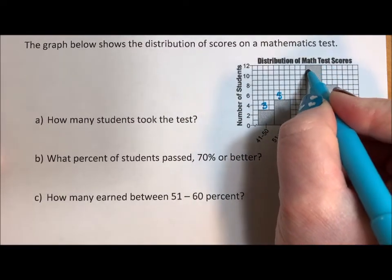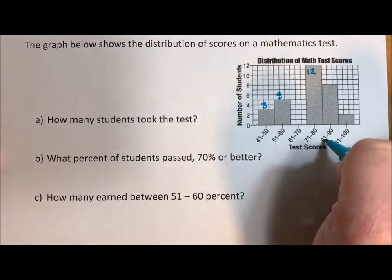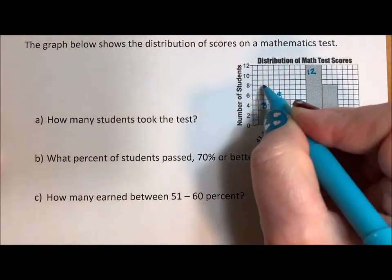71 to 80, we have 12. 81 to 90, we have eight.